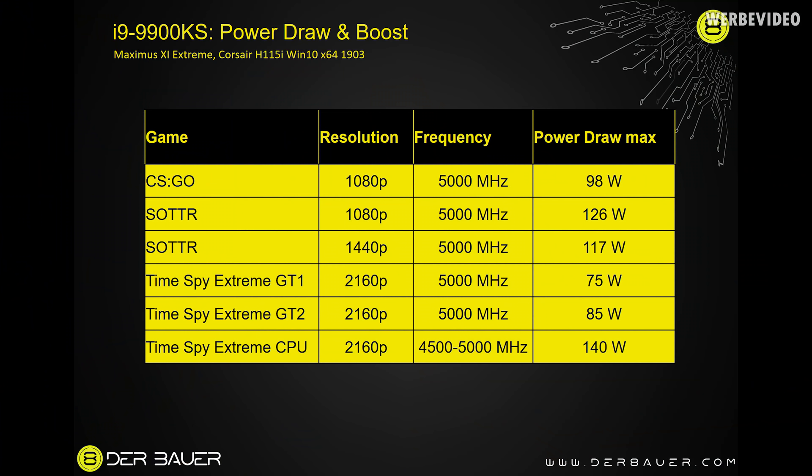I tested different gaming applications to see how the boost frequency behaves. For CS:GO, the CPU consumed a maximum of 98W, so 5 GHz was maintained all the time. With Shadow of the Tomb Raider at 1080p, the CPU consumed up to 126W, and 5 GHz was always present. At 1440p, load shifts more toward the GPU and CPU power dropped to 117W, still maintaining 5 GHz. In 3DMark's Time Spy Extreme, the graphics tests maintained 5 GHz, but in the physics test the CPU dropped to around 4.5–5 GHz.